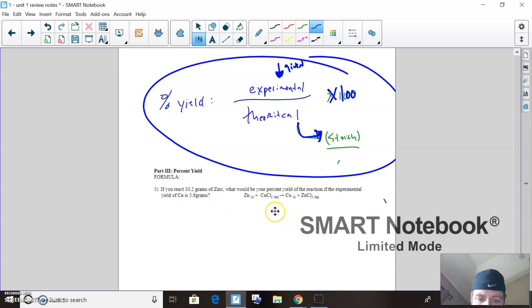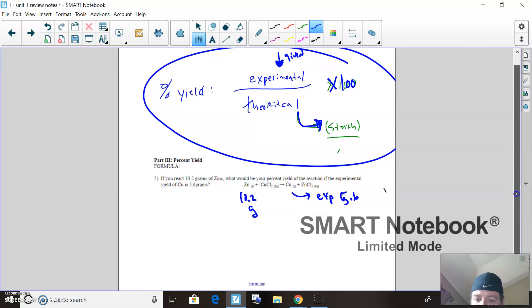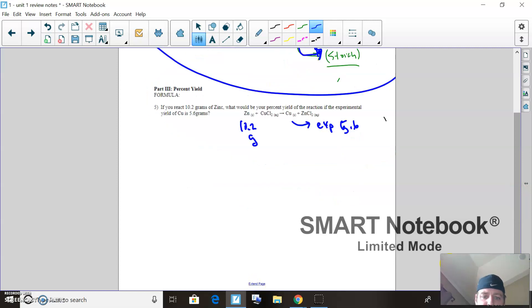So in this question here, if you have 10.2 grams of zinc—so I have 10.2 grams of zinc—what would be your percent yield if the experimental yield of copper is 5.6? So what then I can do is say, well alright, what is 10.2 grams of zinc going to give me? It's going to give me how many grams of copper. That is what I call my theoretical.